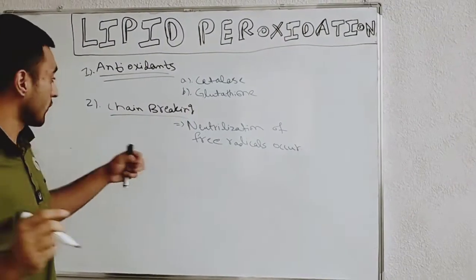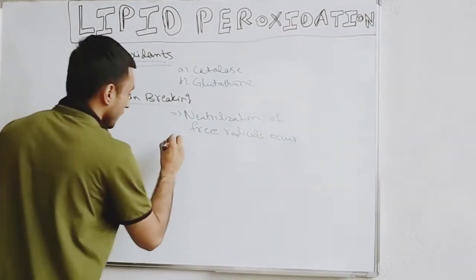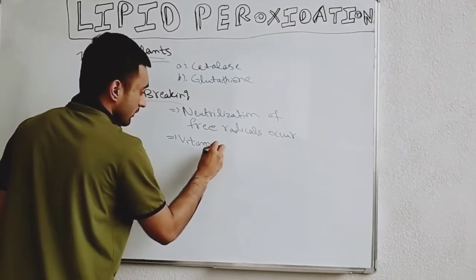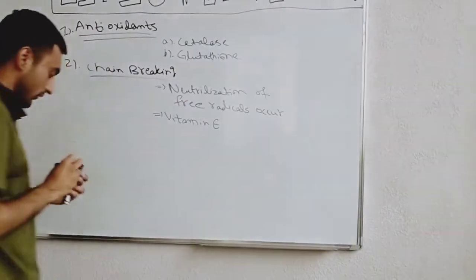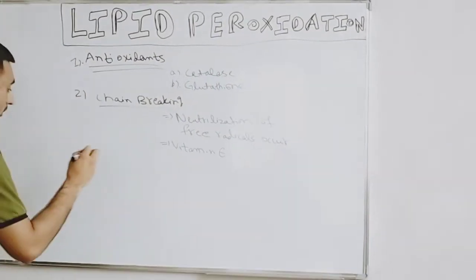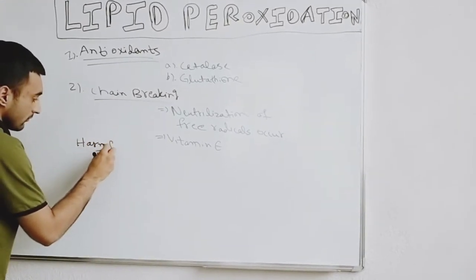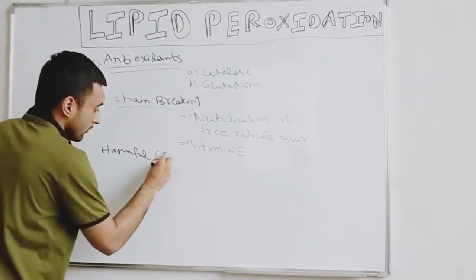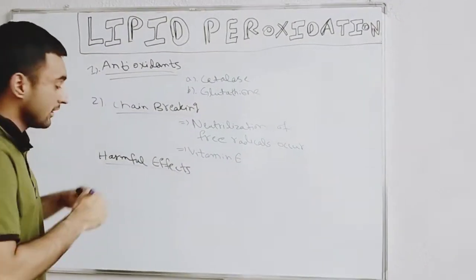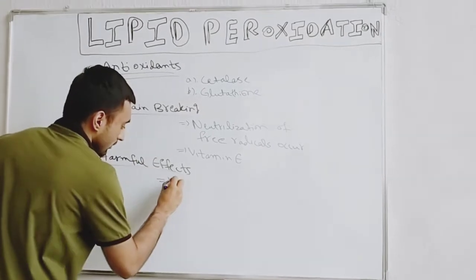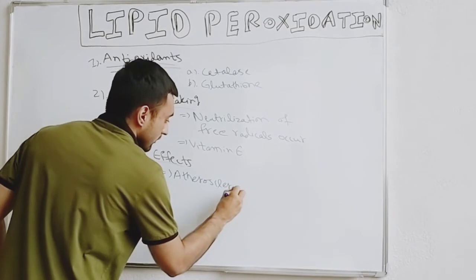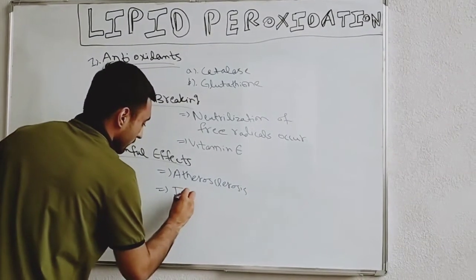Vitamin E actually causes this chain-breaking process. After this, the last thing I will tell you about is the harmful effects of lipid peroxidation, which include atherosclerosis and inflammation.